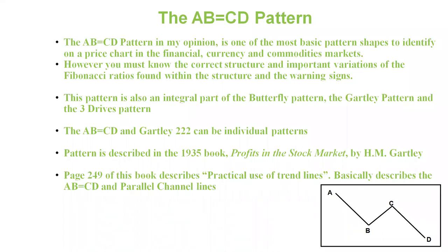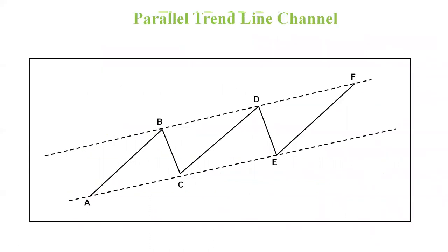This pattern was first described in 1935 by H.M. Gartley in his classic book, Profits in the Stock Market. On page 249, he described the practical use of trend lines, basically describing parallel channel lines, and within those we find ABCD patterns. Here's an illustration of a parallel channel — these can be upsloping, downsloping, or horizontal. The price tends to repeat by testing the lows and the highs of these patterns.